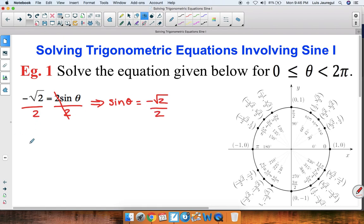Now keeping in mind that y equals r sine of theta and that we're dealing with the unit circle, that is the circle centered at the origin with radius equal to 1, we have that y equals sine of theta. So here what we're looking for is angles whose y coordinate equals negative square root of 2 over 2.